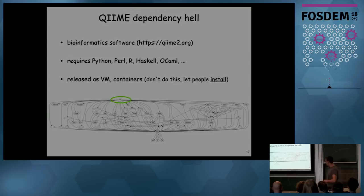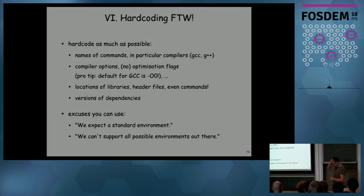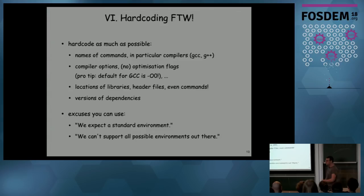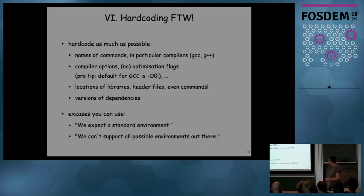Hard coding: you should hard code stuff as much as possible. Names of compiler commands — there's only one compiler out there, that's GCC, right? There's nothing else. Compiler options: try to pick flags that only work with GCC and nothing else so stuff will break. By the way, if you don't specify an optimization level in GCC you get -O0, so stuff is going to be very slow if you don't give it at least -O2 in a Makefile — that's not a joke. Also hard code locations of libraries and header files — maybe even your own home directory.